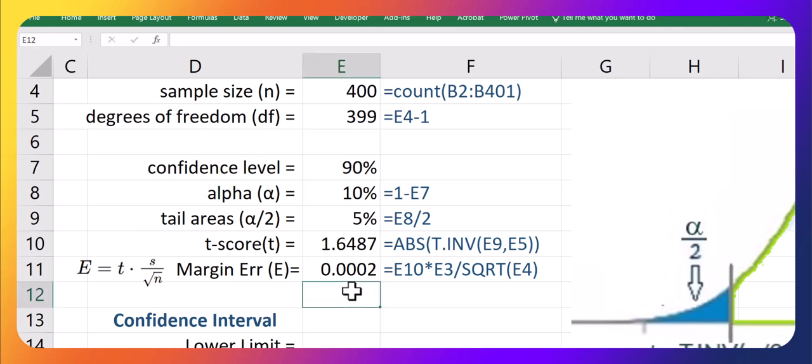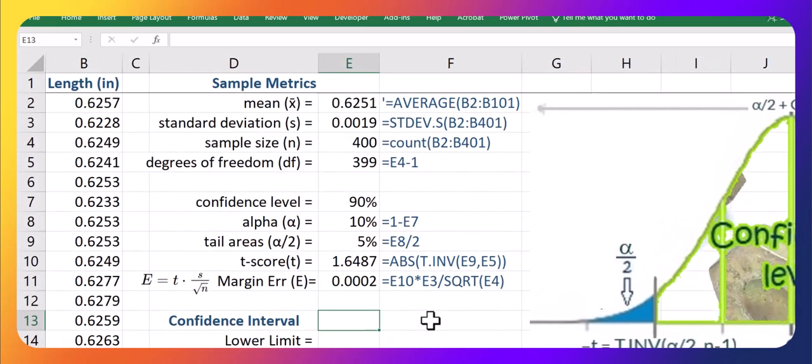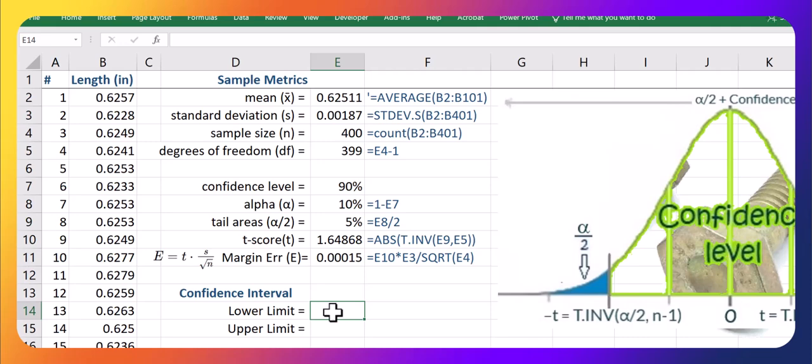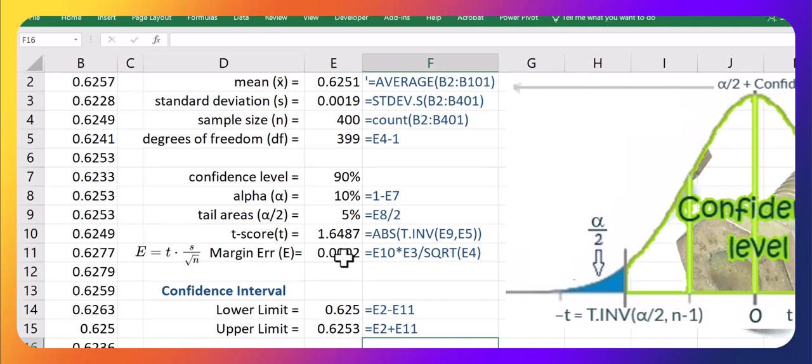Once you've got that, you can go ahead and build up your lower and your upper limit for your confidence interval. So now once we've got our margin of error, we just take our sample mean x-bar minus our margin of error to get the lower limit. And take our sample mean and add our margin of error to get our upper limit. So those are our bounds for our confidence interval. Let's just add a couple more decimals here. Beautiful.